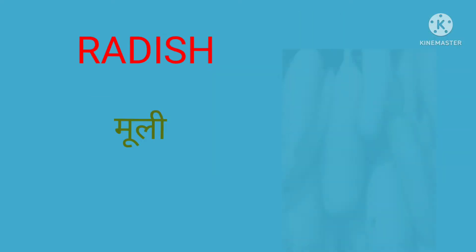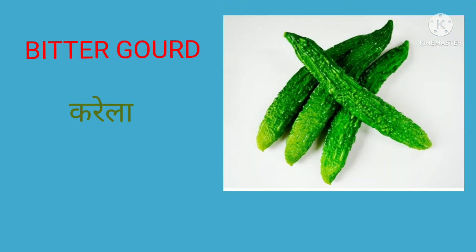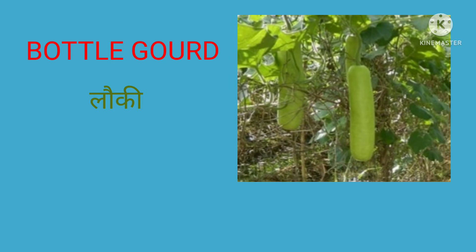This is radish, in Hindi it's called muli. This is bitter gourd, in Hindi it's called karela. This is sponge gourd, in Hindi it's called ghevda or nenua or gilki.